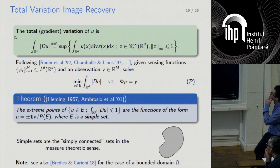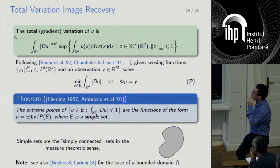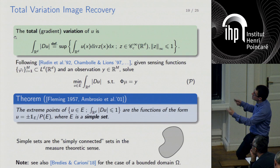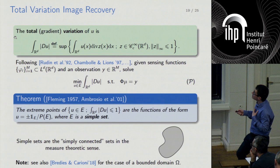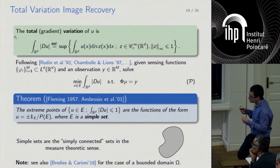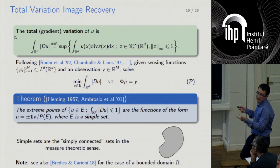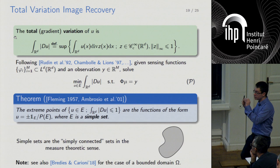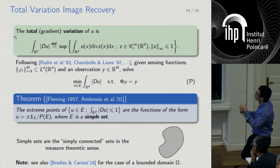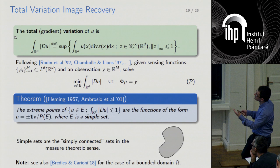The key to our representer theory for total variation is a result due to Fleming, formulated in terms of currents or generalized surfaces, revitalized by Ambrosio, Caselles, Masnou, and Morel in the framework of BV functions. They say: the extreme points of the total variation unit ball are the indicator functions of simple sets divided by their perimeter. A simple set is roughly a simply-connected set — one piece with no holes.